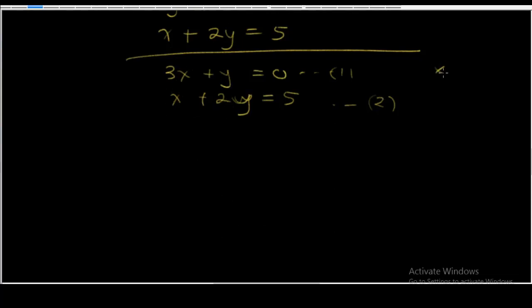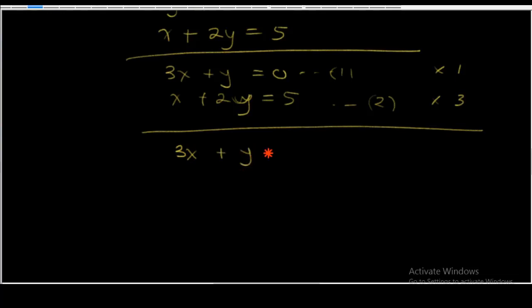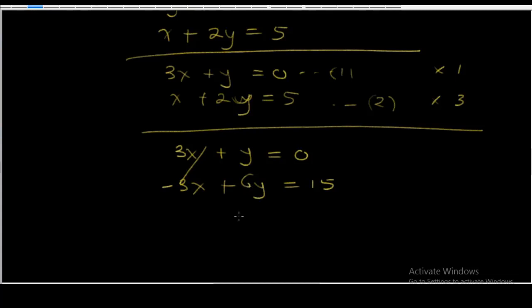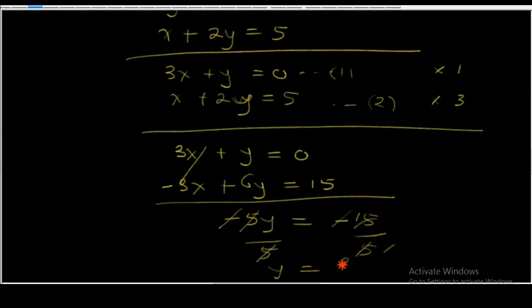Let's solve for y by eliminating x. We multiply equation 1 by 1 and equation 2 by 3. So we have 3x plus y equals 0, and 3x plus 6y equals 15. Subtracting equation 2 from equation 1, the x terms cancel, and y minus 6y gives minus 5y equals minus 15. Since minus cancels minus, dividing both sides by 5 gives y equals 3.